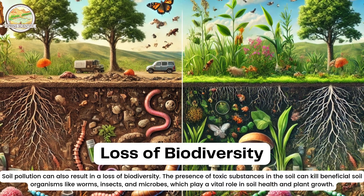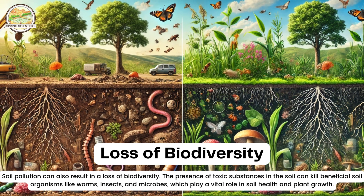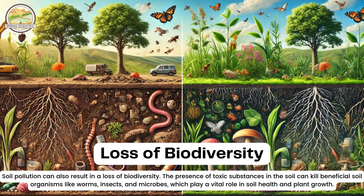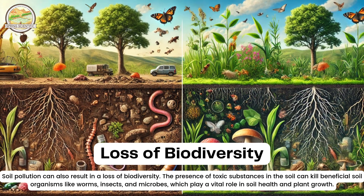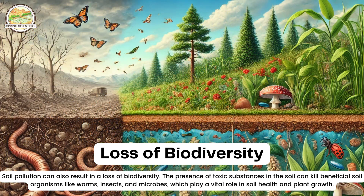The third impact is loss of biodiversity. Soil pollution can result in a loss of biodiversity. The presence of toxic substances in the soil can kill beneficial soil organisms like worms, insects and microbes, which play a vital role in soil health and plant growth.